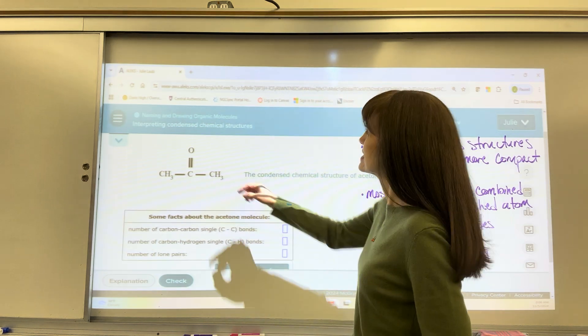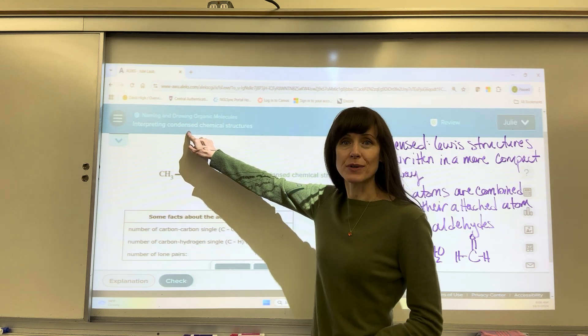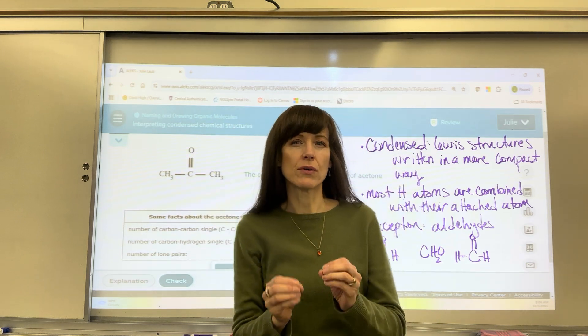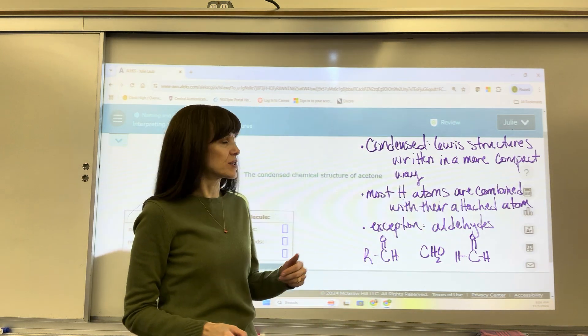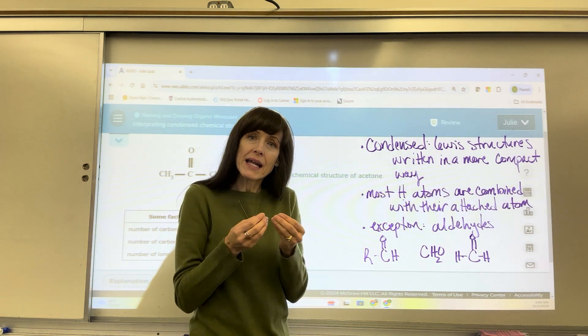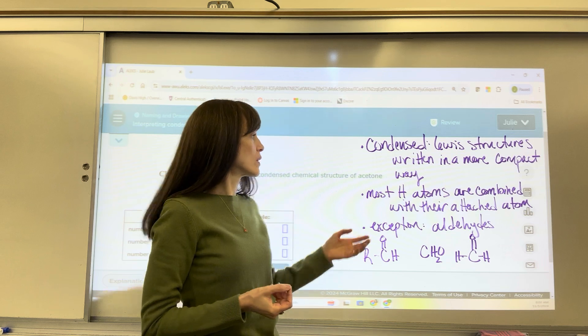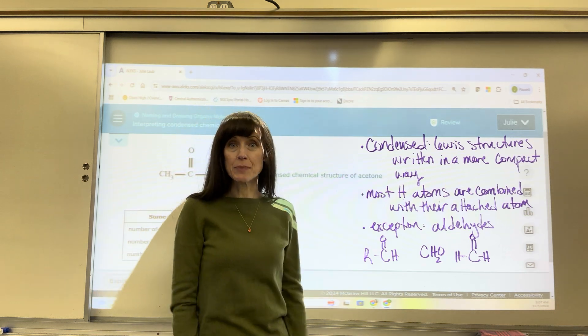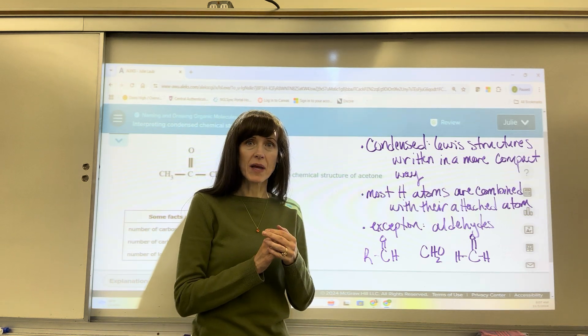The particular question is interpreting condensed chemical structures. Just a quick review for you on condensed structures. Condensed structures are these Lewis dot structures that we write in an abbreviated form simply to save time and space when we're writing them.